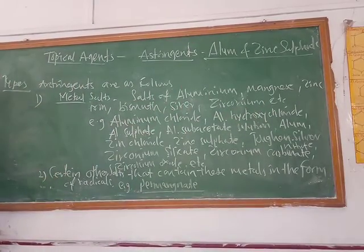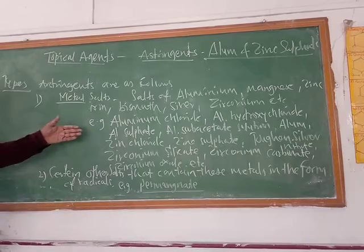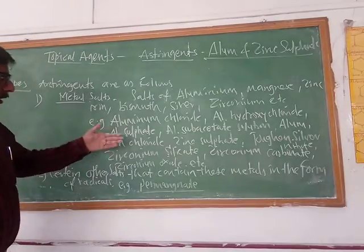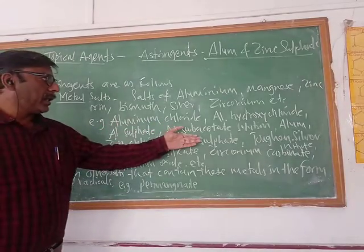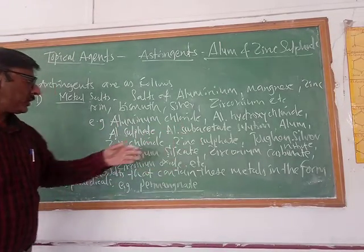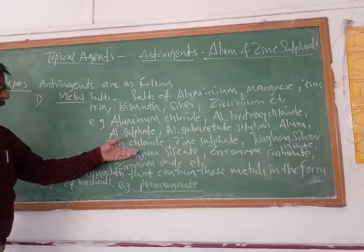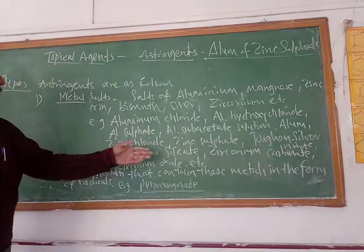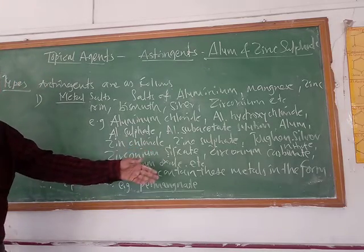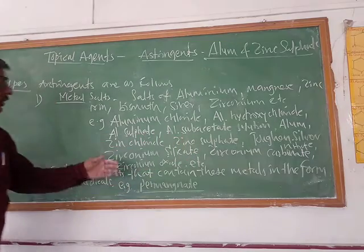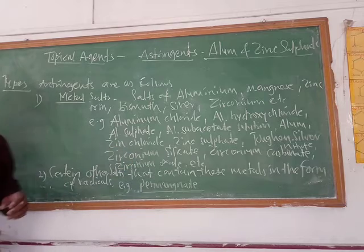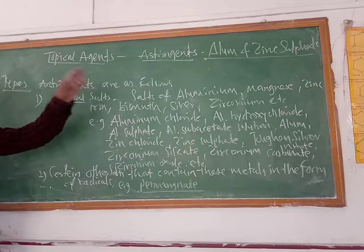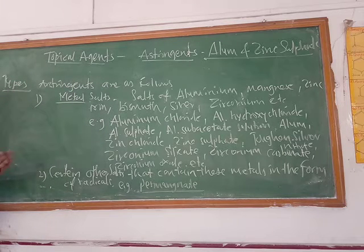So which are the different salts of all these? For example: aluminium chloride, aluminium hydroxychloride, aluminium sulfate, aluminium subacetate solution, alum, zinc chloride, zinc sulfate, silver nitrate, and zirconium salts like zirconium silicate, zirconium carbonate, zirconium oxide etc. So these are the different metal salts which are astringents.